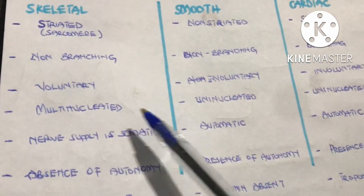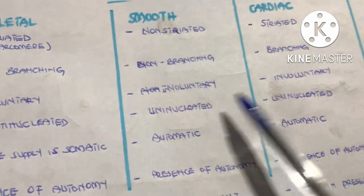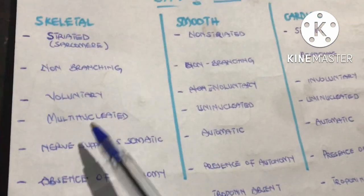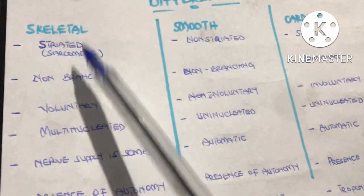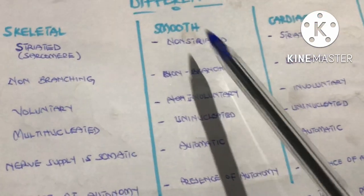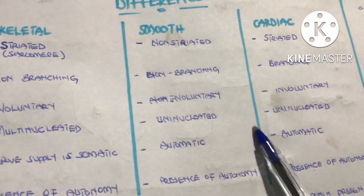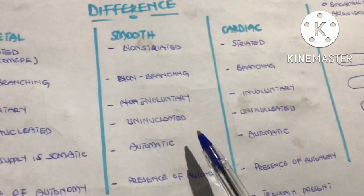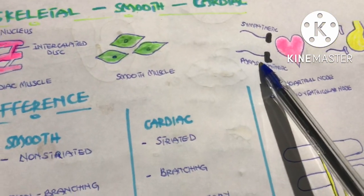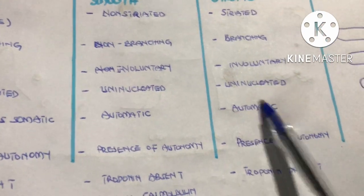The skeletal muscle is multi-nucleated, the smooth muscle is uninucleated, and the cardiac muscle is also uninucleated. The nerve supply to the skeletal muscle is somatic, but the nerve supply to the smooth muscle is autonomic — divided into sympathetic and parasympathetic.